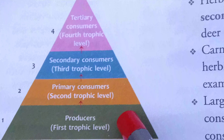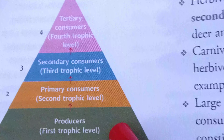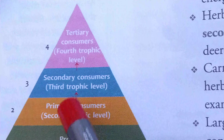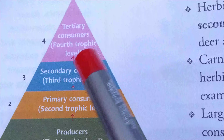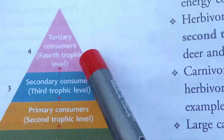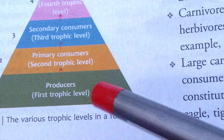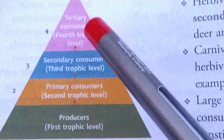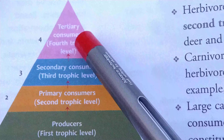The various Trophic Levels are: green plants or producers that fix the solar energy constitute the first Trophic Level. Herbivores or primary consumers constitute the second Trophic Level, for example snails, rabbits, deer and goats.